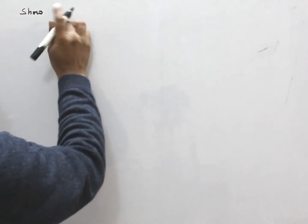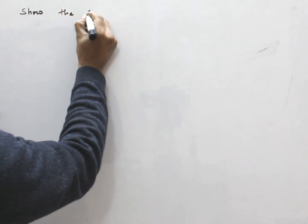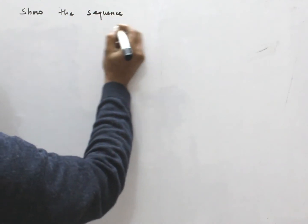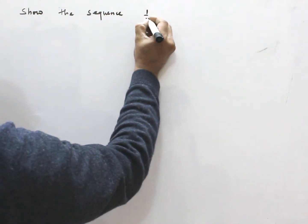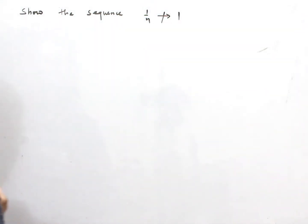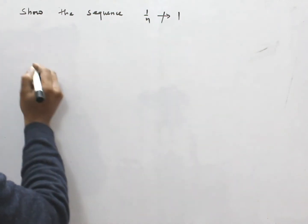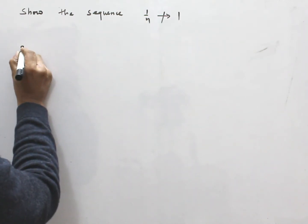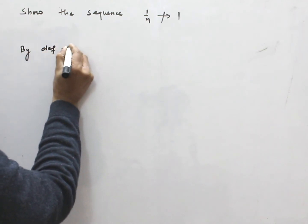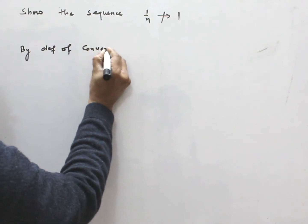So, the sequence 1/n not converging to 1. To prove this result by definition of convergence,